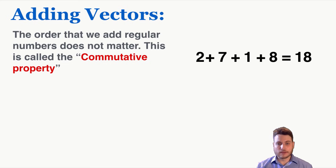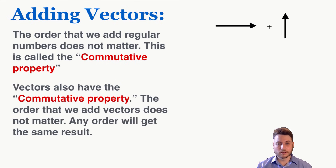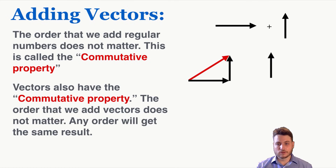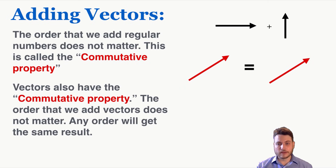The order that we add regular numbers doesn't matter — mathematicians call this the commutative property. In the same way, vectors also have the commutative property: the order that we add vectors does not matter, and any order will get the same result. So if I add these tip-to-tail, it doesn't matter which vector I place first — both ways yield the same final vector.